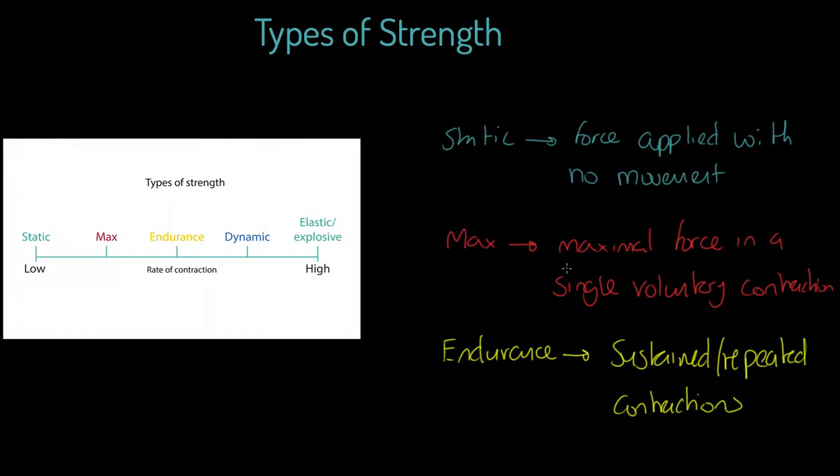This by definition has a greater rate of contraction than max because we're doing it more frequently. Let's look at dynamic strength. Very simple definition here: dynamic strength is force applied with any kind of movement. Both strength endurance and max strength typically are dynamic in their nature because they're including motion.